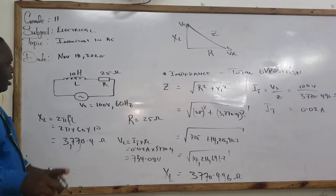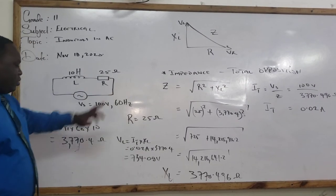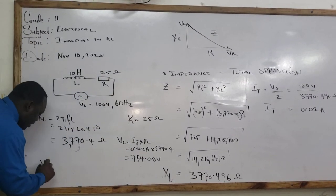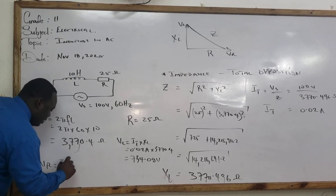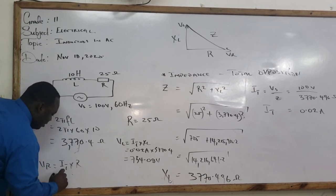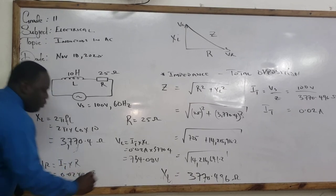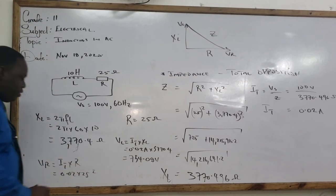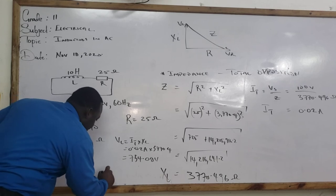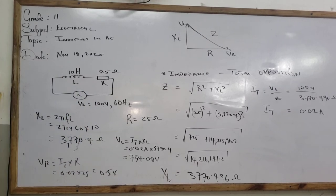Well, let us do the same for our resistance. 0.026 times 25. So VR is equal to IT times R, which is 0.026 times 25. What do we get? 0.5. 0.5 volts.